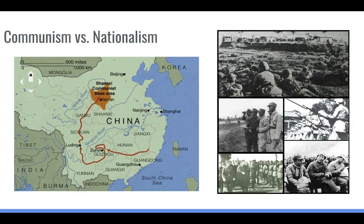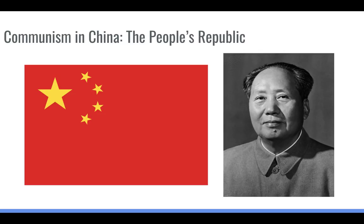At the end of that civil war, Mao Zedong and his Communist Party came out as victors. Chiang Kai-shek and the nationalists were forced off the mainland to the island of Taiwan. The Communist Party in China, which became known as the People's Republic of China, is still in control of China to this very day.